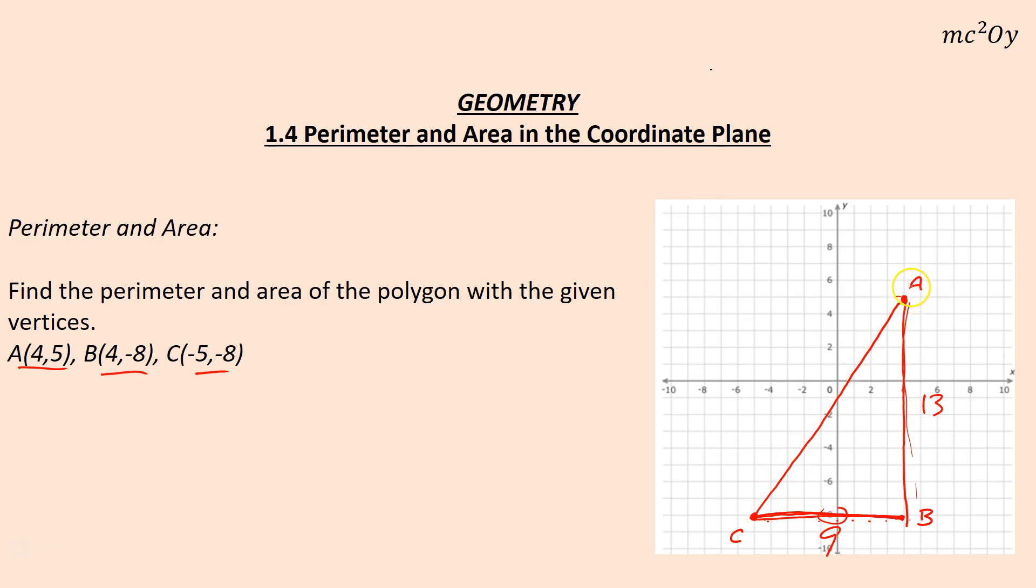The side from C to A is tougher - you have to use the distance formula, or if I already have a picture I just use the Pythagorean theorem, which is a² + b² = c². I already know what a is, it's 9, so 9² is 81. And I already know what b is, b is 13, and 13² is 169.